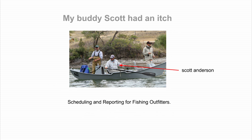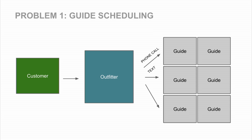I ended up having dinner with my girlfriend and Scott Anderson — he's the middle guy in the boat — and he was telling me about all these operational problems that fly fishing outfitters have in the state of Montana. They're primarily around scheduling and reporting. The guide scheduling is a big problem: you have a customer and an outfitter. The outfitter is like the travel agent for the guide — a guide can't get a fishing trip directly from a customer. So the outfitter is sitting there calling or texting all these guys. Some of our outfitters have 20 guides in their pool, so they're literally making 20 phone calls. That's a huge problem.